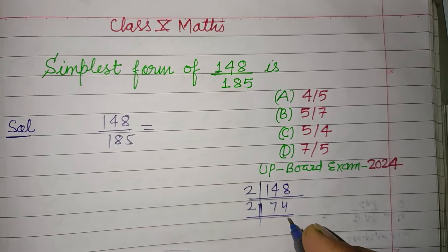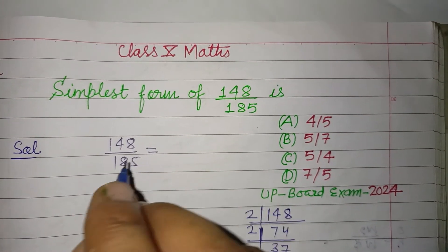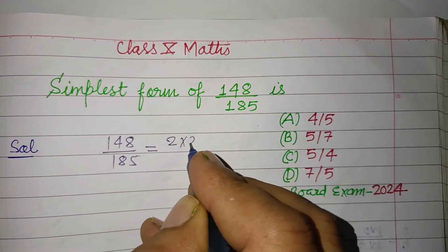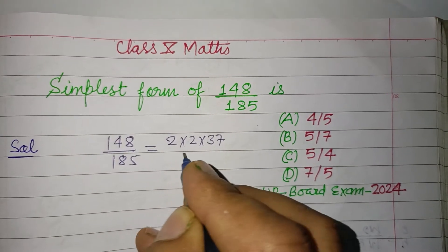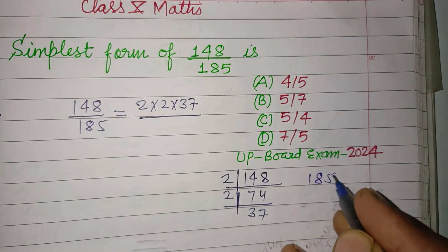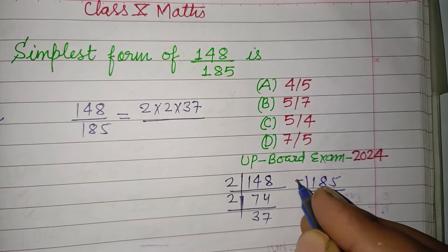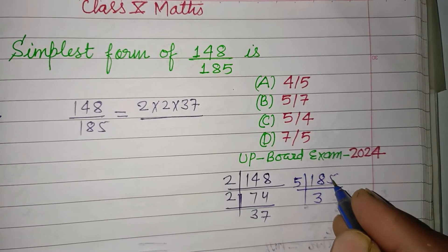So 37 is prime, so we write it as 2 times 2 times 37. Now for 185, 185 can be broken into factors by dividing by 5: 5 times 37 equals 185.